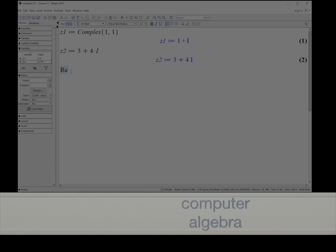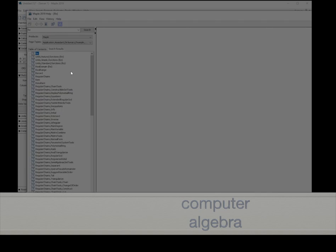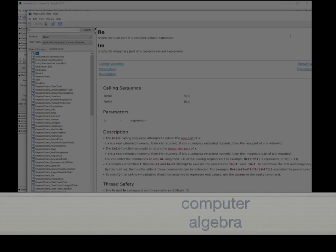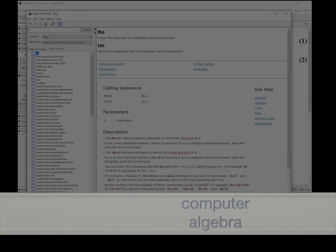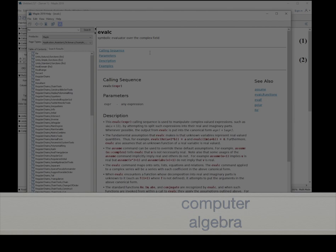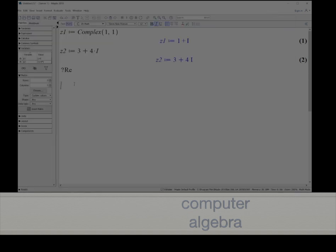We might guess that there is a function, for example, with the name RE. We do not know, so we will ask the Maple system whether there is such a thing. Indeed, the Maple help system opens. Then you can get a lot of information about the function real or imaginary, or you can also get information about the evaluation over the complex field.